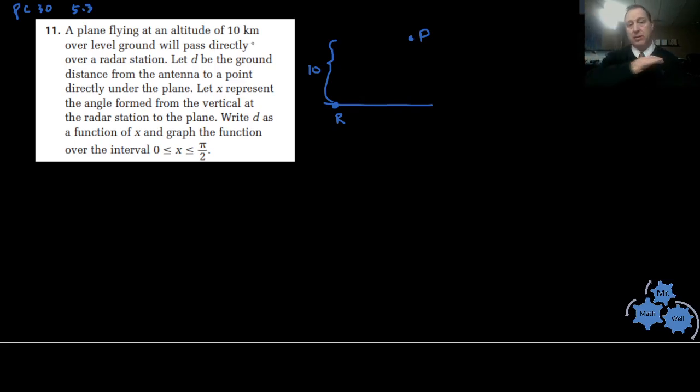Let d be the ground distance from the antenna to the point directly under the plane. So here is d, this distance from R to this point P directly underneath the plane.